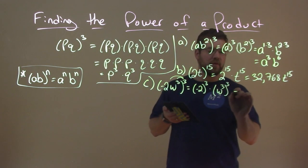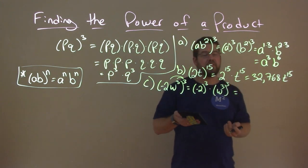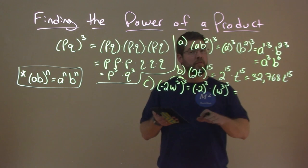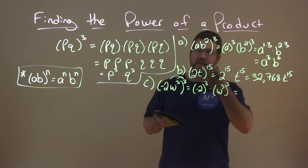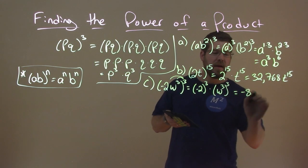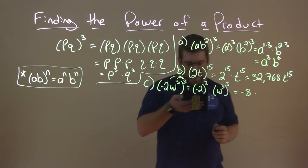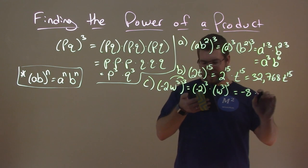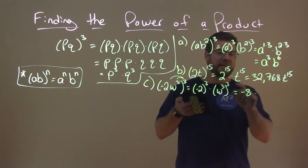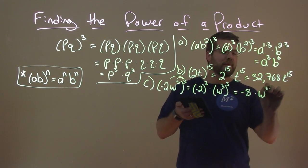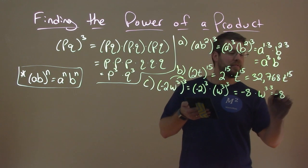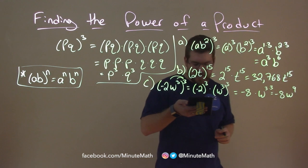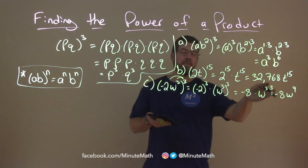So, negative 2 to the third power, well, we should know that off the top of our head, but if not, negative 2 times negative 2 is a positive 4, times a negative 2 is a negative 8. Then, remember, we have to multiply our exponents. Excuse me. Almost made a mistake there. And so, we have w to the 3 times 3 power, which is equal to, 3 times 3 is 9, w to the ninth power. And our answer is negative 8w to the ninth.